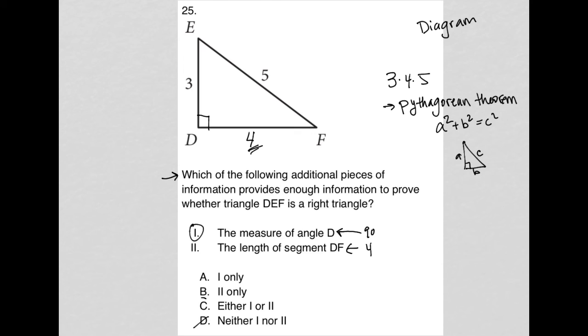So I like choice C, either one or two, either one of those bits of information would allow us to prove that triangle DEF is in fact a right triangle.